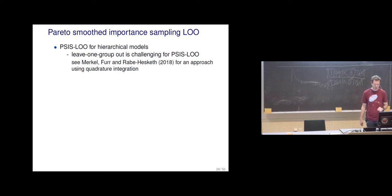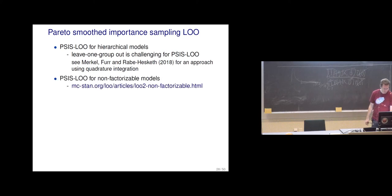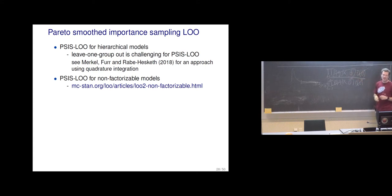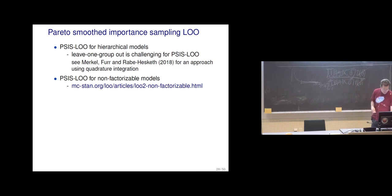When the likelihood has a factorizing form — a product of independent terms — it is easy to remove just one term. We also have a paper discussing that non-factorizable multivariate Gaussian models can also be handled with this approach. Time series is a bit different. As discussed last time, in time series we might want to leave all the future out, not letting future data make it easier to predict what's happening next.